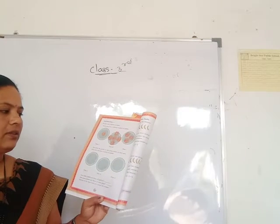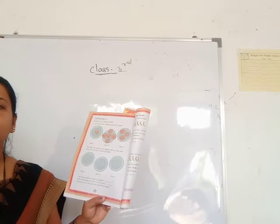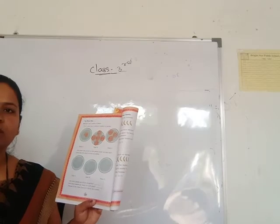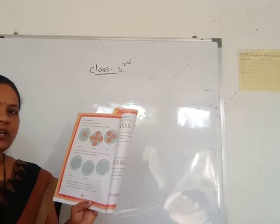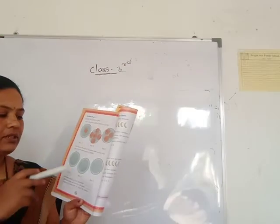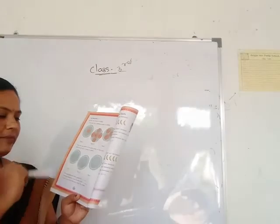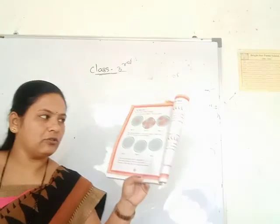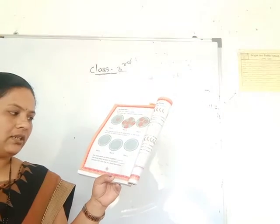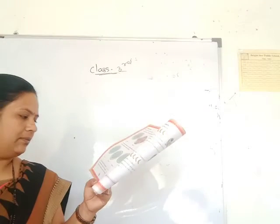Now draw the jalebes on the plates below so that each plate has the same number of jalebes. There are three plates and nine jalebes total. Put three jalebes in each plate. Plate A — three jalebes, Plate B — three, Plate C — three jalebes. How many jalebes altogether? Nine. How many in each plate? Three jalebes.